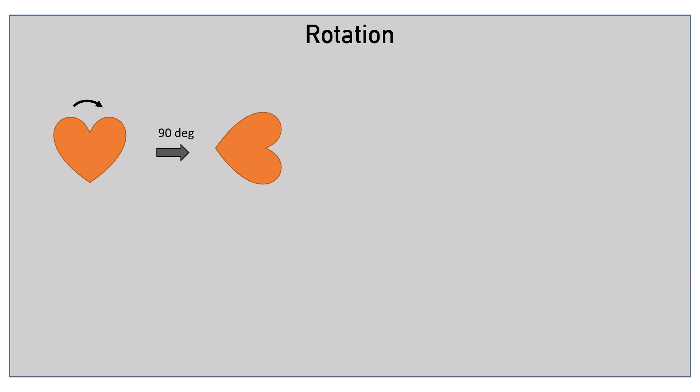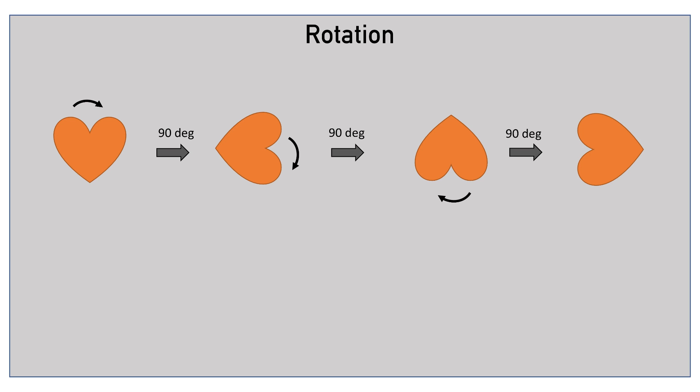Let us quickly repeat a similar exercise on a heart-shaped object. The heart facing upward, after 90-degree rotation, is facing right. Applying another 90-degree rotation brings the heart facing down. And rotating it by another 90 degrees brings the heart facing left.